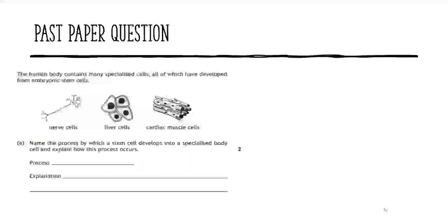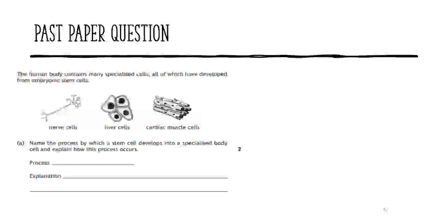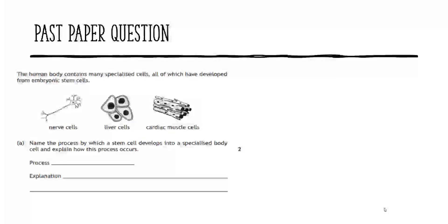Finally, let's try a restricted response style question. The human body contains many specialized cells, all developed from embryonic stem cells — examples given are nerve cells, liver cells, and cardiac muscle cells. You're asked first to name the process by which a stem cell develops into a specialized body cell, and then to explain how this process occurs. Pause the video and write down or come up with your answer.